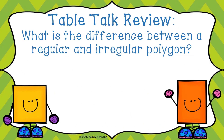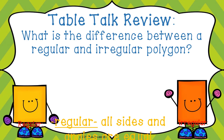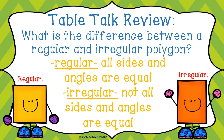What is the difference between a regular and an irregular polygon? A regular polygon has all sides and angles equal, while an irregular polygon does not have all sides and angles equal.